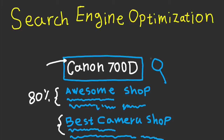And that's why search engine optimization is very critical. Search engine optimization is a process. If you want to understand SEO properly, you need to think of it this way: Google's goal is to return the best match for any search keyword or search query. The way they do it is they consider different factors.